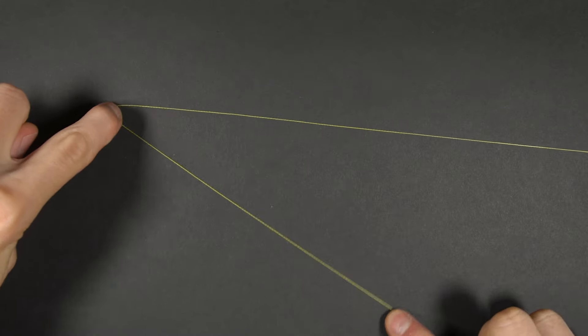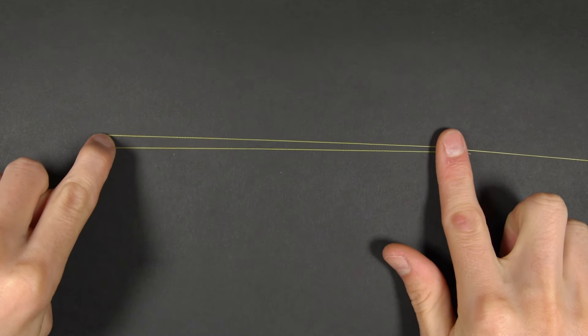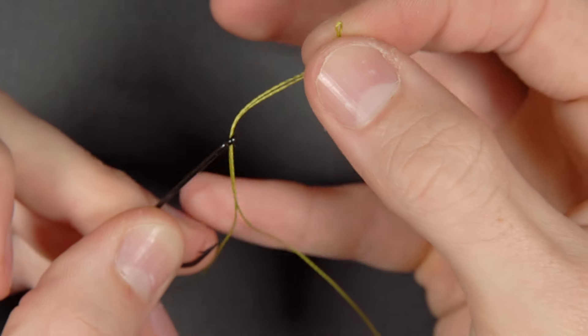Firstly, take your line and fold back a section, approximately six inches long. Pass this doubled up section through the eye of your hook.